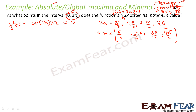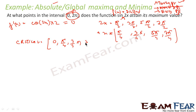Non-differentiable points are not in the picture because sin(2x) is a differentiable function. For endpoints, we take 0 and 2π. So the full set of critical points is: 0, π/4, 3π/4, 5π/4, 7π/4, and 2π. The first and last are endpoints and the middle four are turning points.